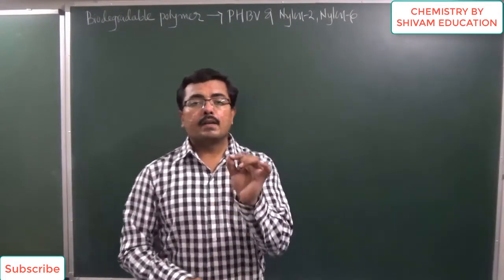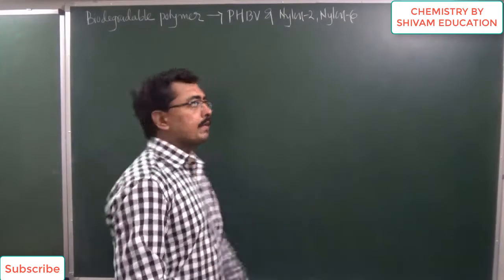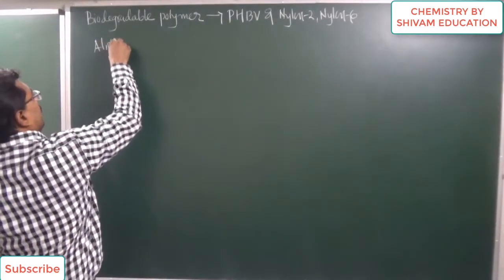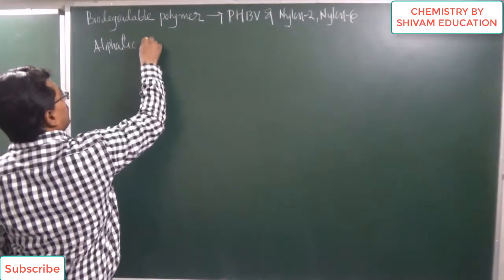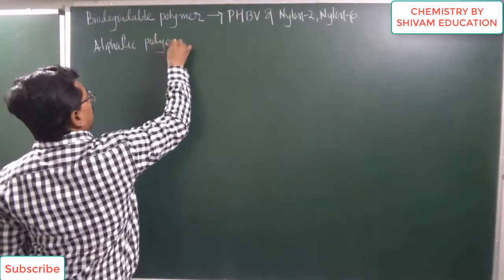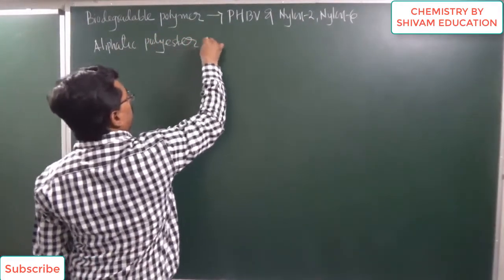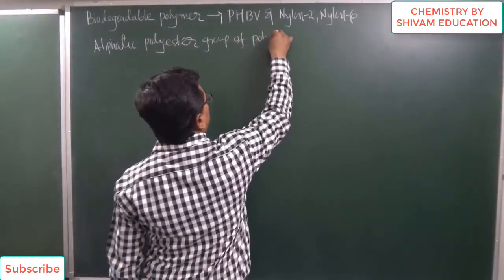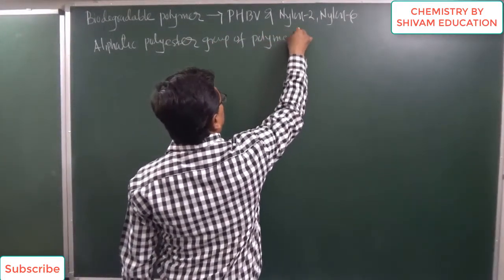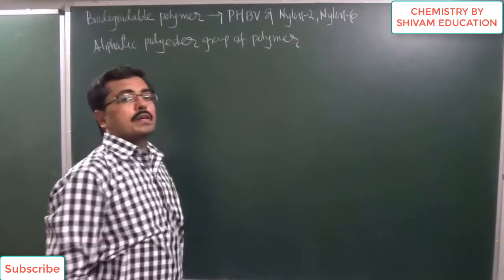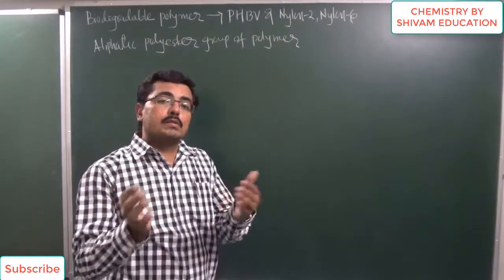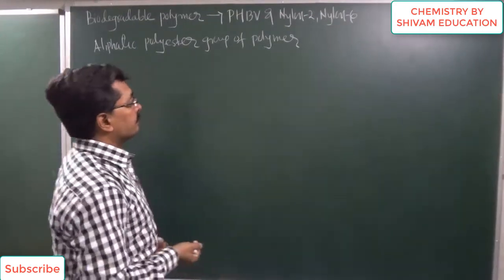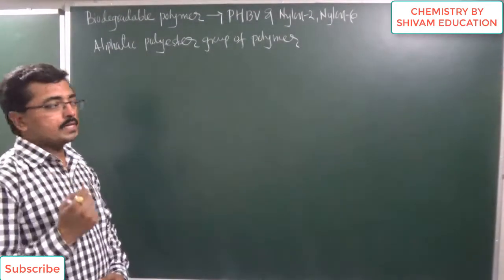It is observed that different types of aliphatic polyester group polymers are biodegradable polymers. Second, the polyamide group of polymers — Nylon 2-Nylon 6 — is also possible to prepare. So now first we will study about the synthesis of PHBV.